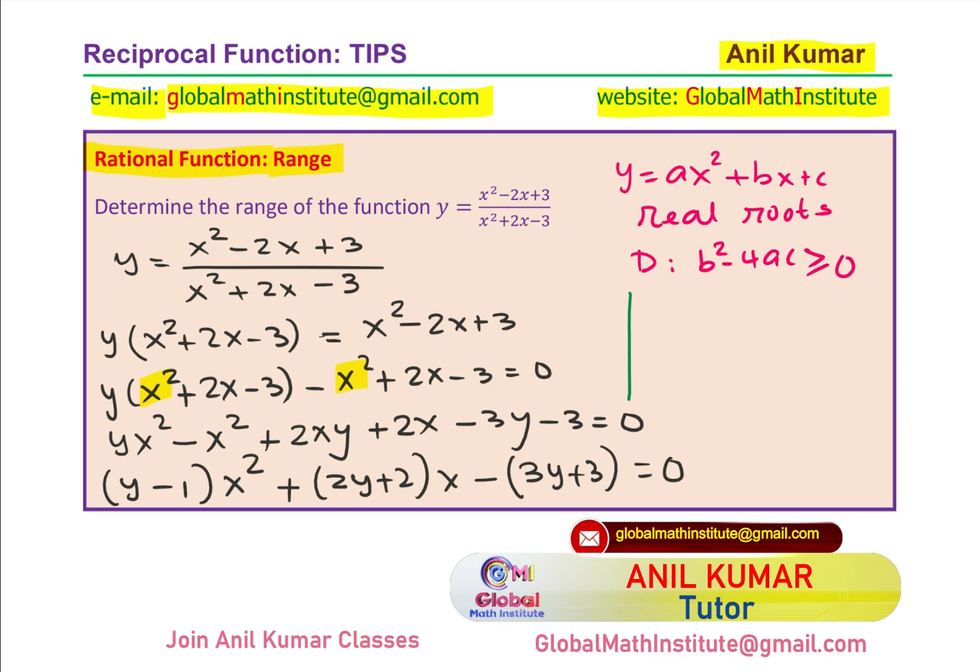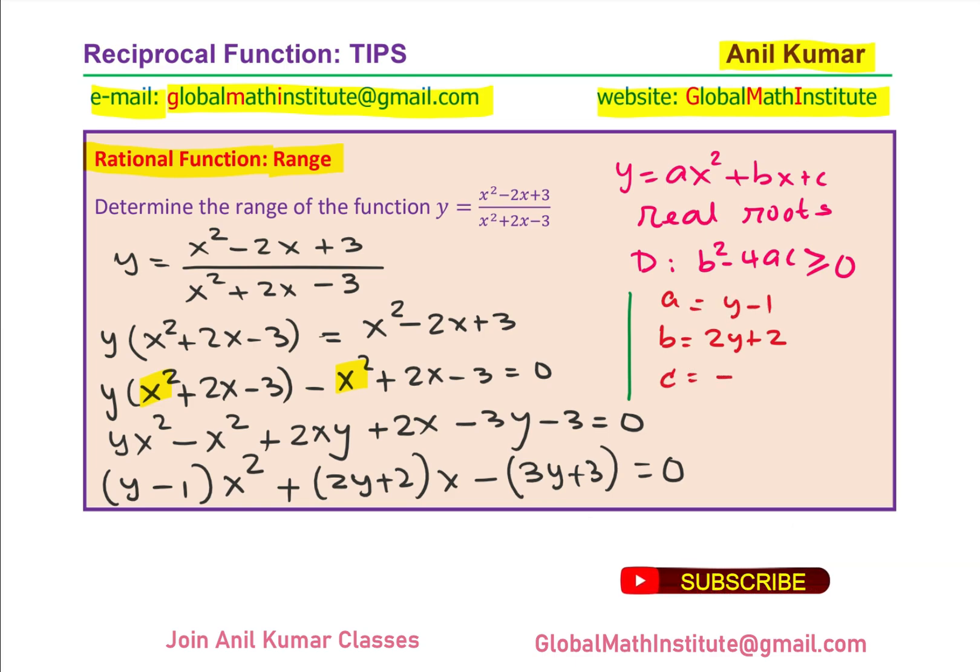as far as b is concerned, b is 2y plus 2. A is y minus 1 and c is minus of 3y plus 3. So b square minus 4ac should be greater than or equal to 0, only then we have real roots and that will give us the range, the y values for the given function.